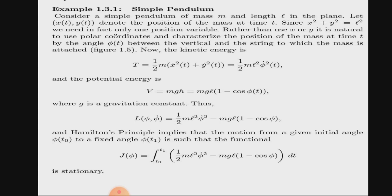And also we define the kinetic energy which is equal to T equals one half m v squared, phi dot squared of phi dot squared of t. And also the potential energy is V equals mgh, and h equals l times 1 minus cos phi of t, where g is gravitational constant. And we define the Lagrangian L(phi, phi dot) which is equal to T minus V. And now the Hamilton principle implies that the motion from a given initial angle phi of t naught to a fixed angle phi of t1 is such that the functional J of phi is stationary.